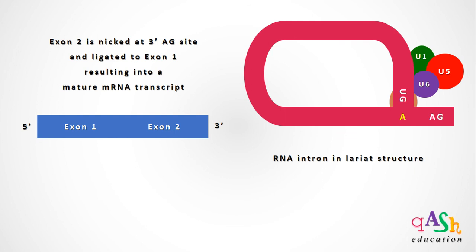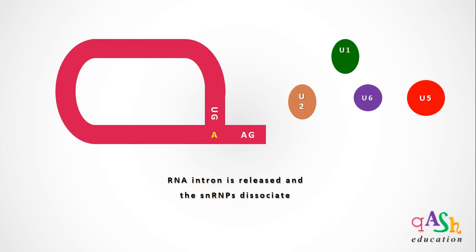The RNA intron remaining from the entire process takes the form of a lariat structure. The exons are now ligated together and can be sent for translation into a protein. The RNA intron in the lariat structure is released for degradation and the SNRPs dissociate. This is how the GU-AG type of introns are spliced from the pre-mRNA transcript to create a mature mRNA, which can then be exported to the cytoplasm where it will be translated into a protein.